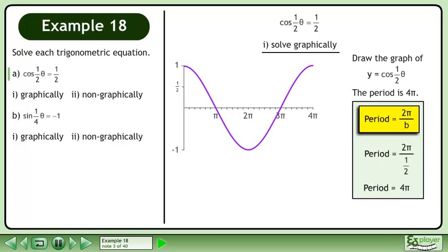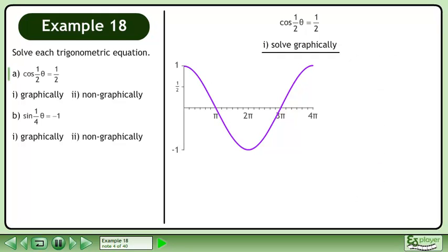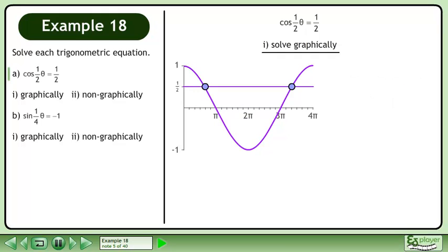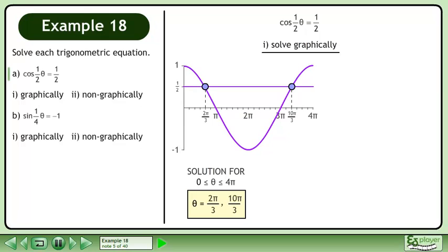Draw the graph of y equals cos, the period is 4pi. The steps required to find the period are shown. Now draw the line y equals 1 half. The solution for the domain where theta is between 0 and 4pi is 2pi over 3 and 10pi over 3.